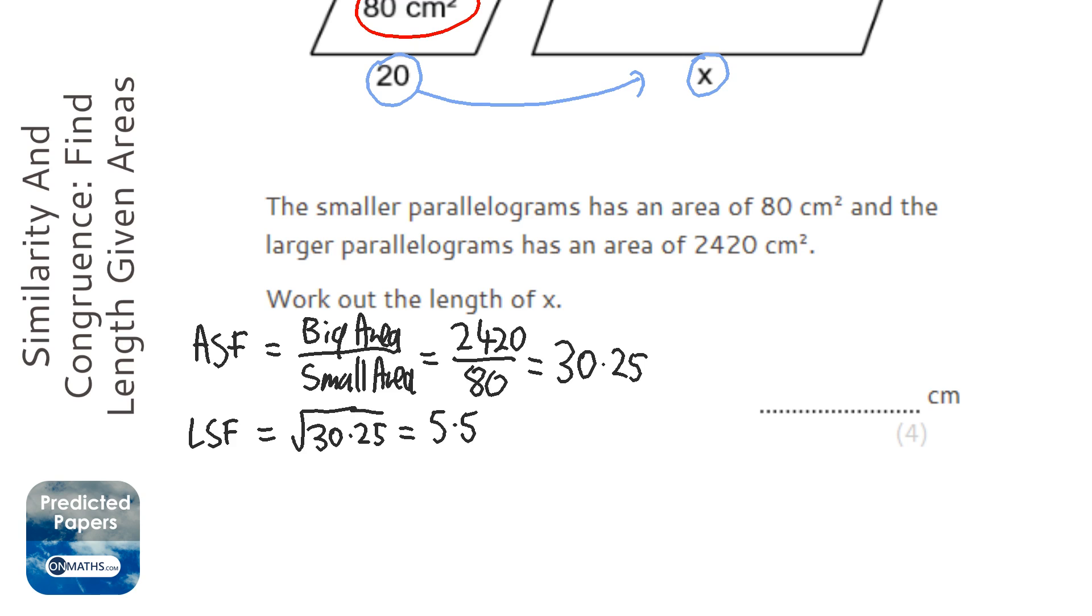So the linear scale factor is 5.5. So we're going to times that 20 by 5.5 to get to the new length. So 20 times 5.5 on the calculator is 110. So the x is 110 centimeters.